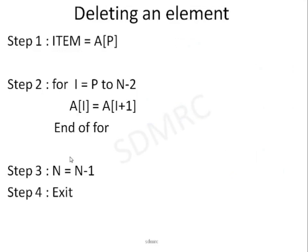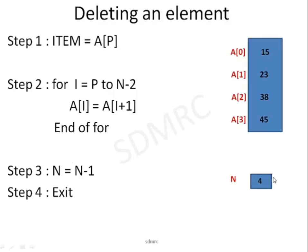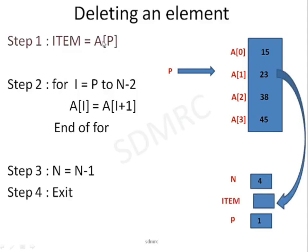Let me trace this algorithm with another example. Consider an array containing 4 elements. I will decide to remove the element from location p = 1, so 23 has to be removed. Execute step number 1: item = a[p]. I will create a variable item. Since p = 1, the value 23 is copied to the variable item.